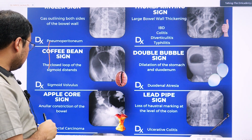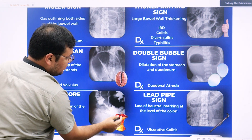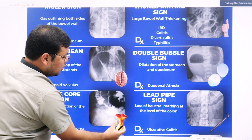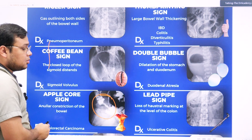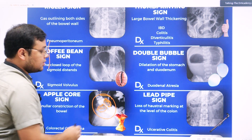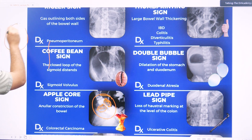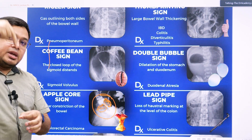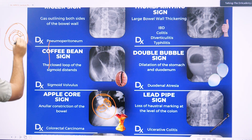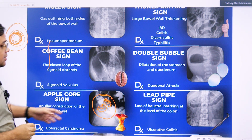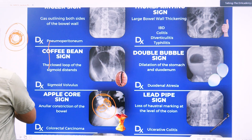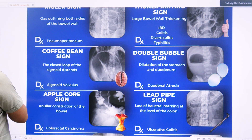The apple core sign is found in colorectal carcinoma. When you eat an apple, only the central portion is shown — the other side is obstructed. Exactly the same appearance is seen in colon carcinoma. The lumen is narrowed by the growth — obscured by the carcinoma. If we cut the lumen and view it from the front, it looks normal in a healthy scenario, but with a growth, the lumen is narrowed. When barium passes through, it centrally shows the apple core sign — found in colon malignancy.